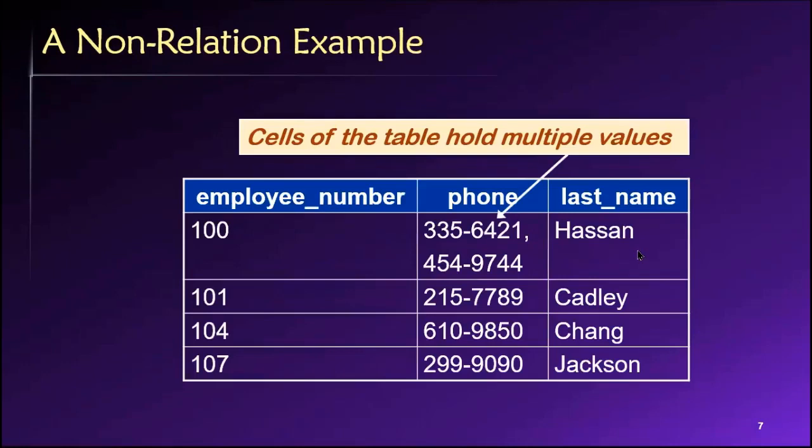Here's an example of a table that is not a relation. So this is one that contains a multi-valued attribute, which means we're trying to store more than one value in a cell. So if we have a phone number column, there should be one phone number per cell, and here you can see we have two phone numbers that we're trying to cram in here. So this does not qualify as a relation because it violates that property.